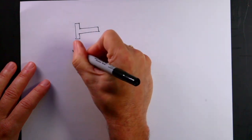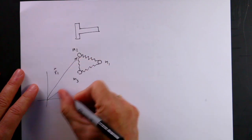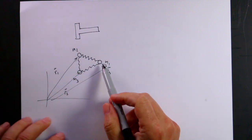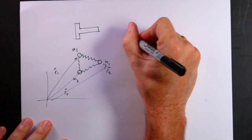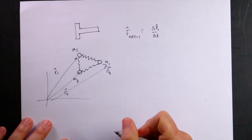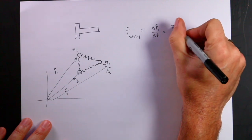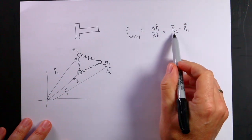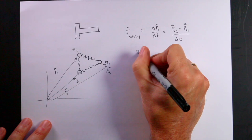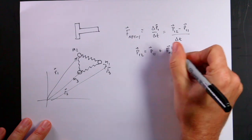What I'm going to do is have these masses connected by springs. Let's call them M1, M2, M3, and there's some origin here. They all have vector positions R1, R2, R3. If I calculate all the forces on mass 1, I can say F_net1 equals the change in momentum for mass 1 with respect to time: P1,2 minus P1,1 divided by delta T. Solving for P1,2 gives P1,1 plus F_net1 times delta T.